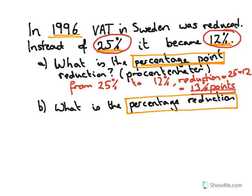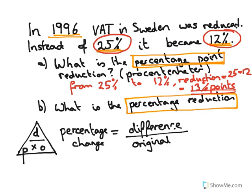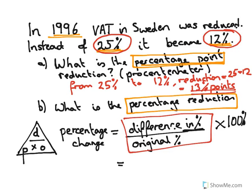But then the next question is: how large was the reduction in percentage? Now we have to use our standard formula for percentage change. Remember our tree — the percentage change is the difference divided by the original. Percentage change is always calculated by taking the difference divided by what it was originally, then multiplying by 100 to convert from decimal form to percentage.